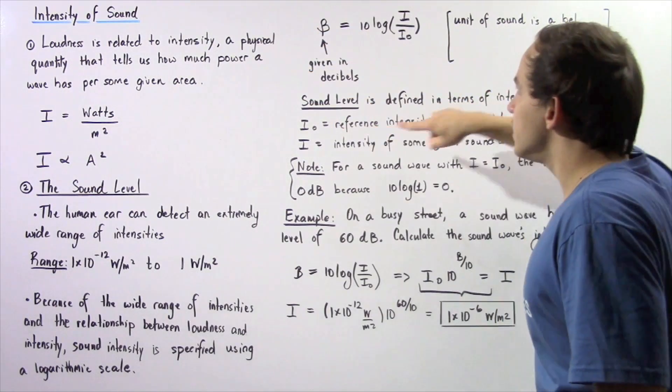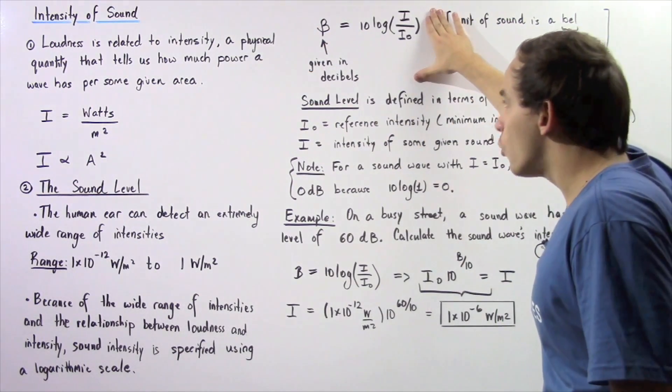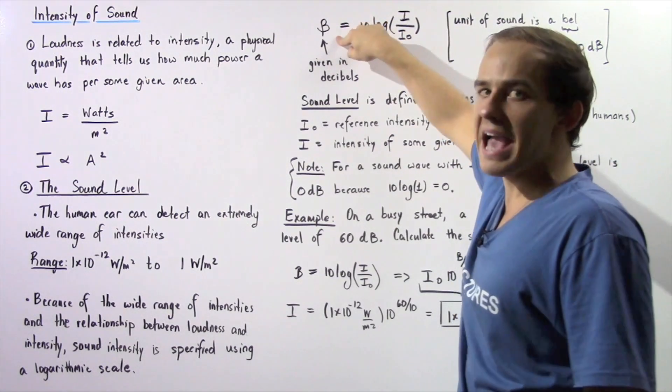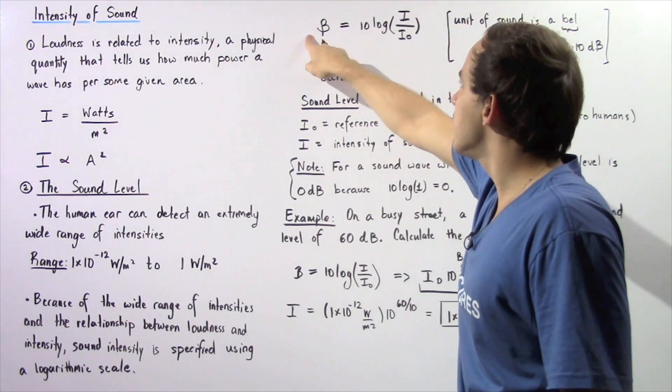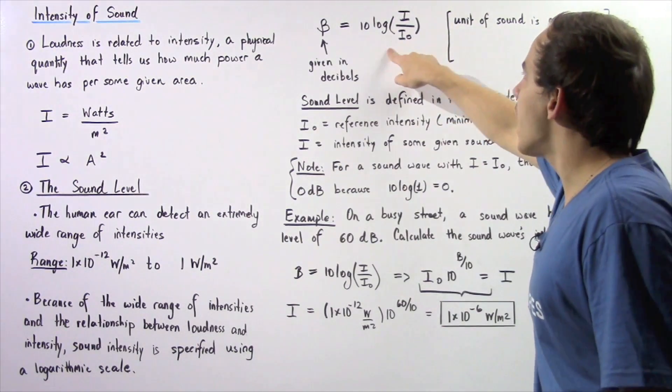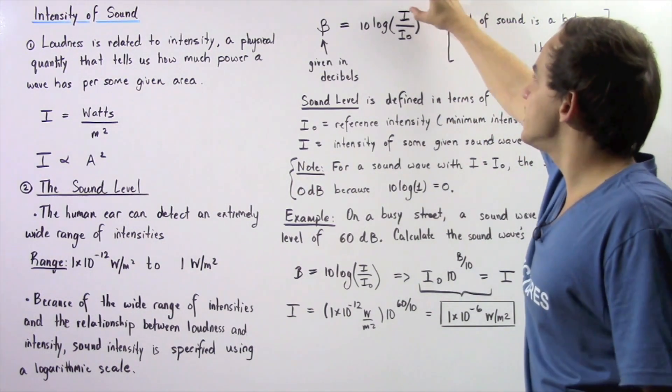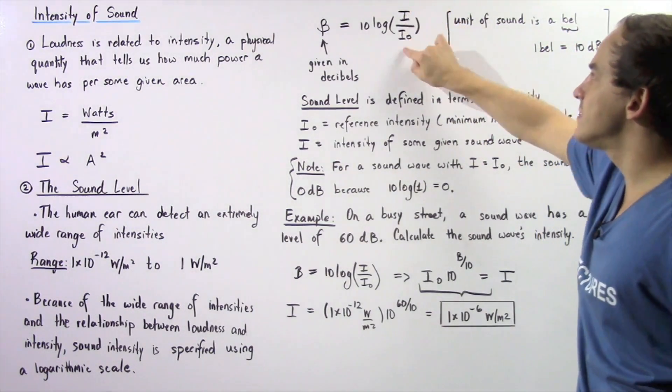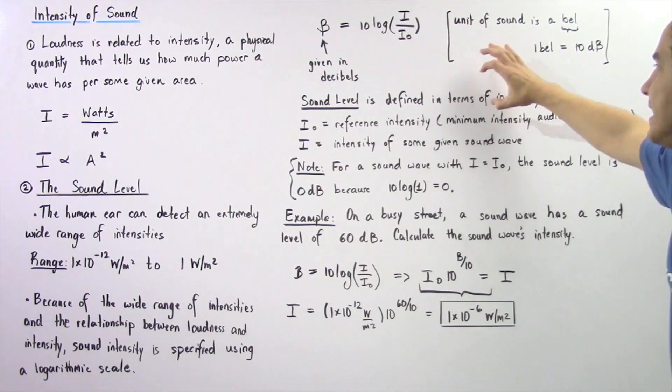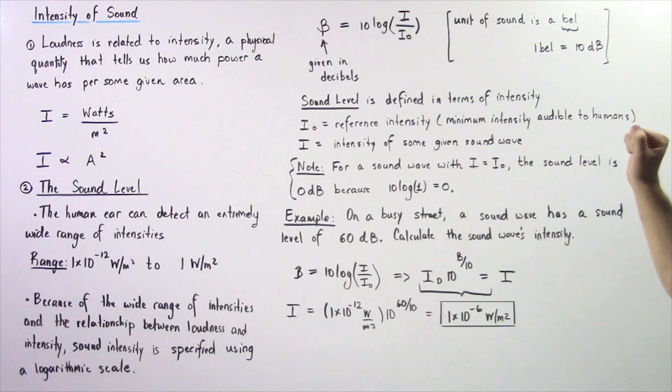The sound level is given by the following equation, where the sound level is given by capital B. The sound level is equal to 10 multiplied by the log of the ratio of the intensity I and intensity I₀. So the sound level is defined in terms of intensity of the sound wave.